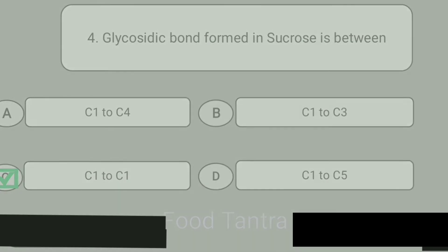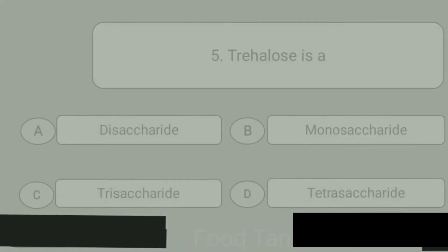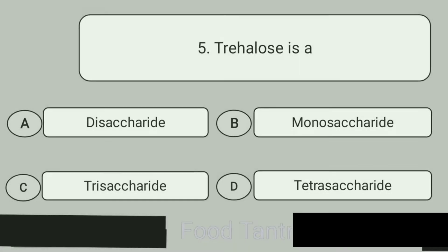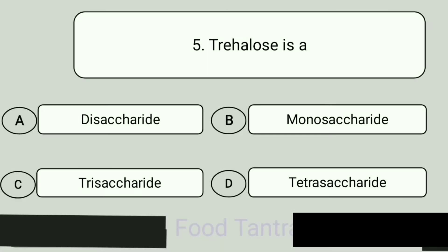Question 5. Trehalose is a. A: Disaccharide. B: Monosaccharide. C: Trisaccharide. D: Tetrasaccharide. Answer is Disaccharide.